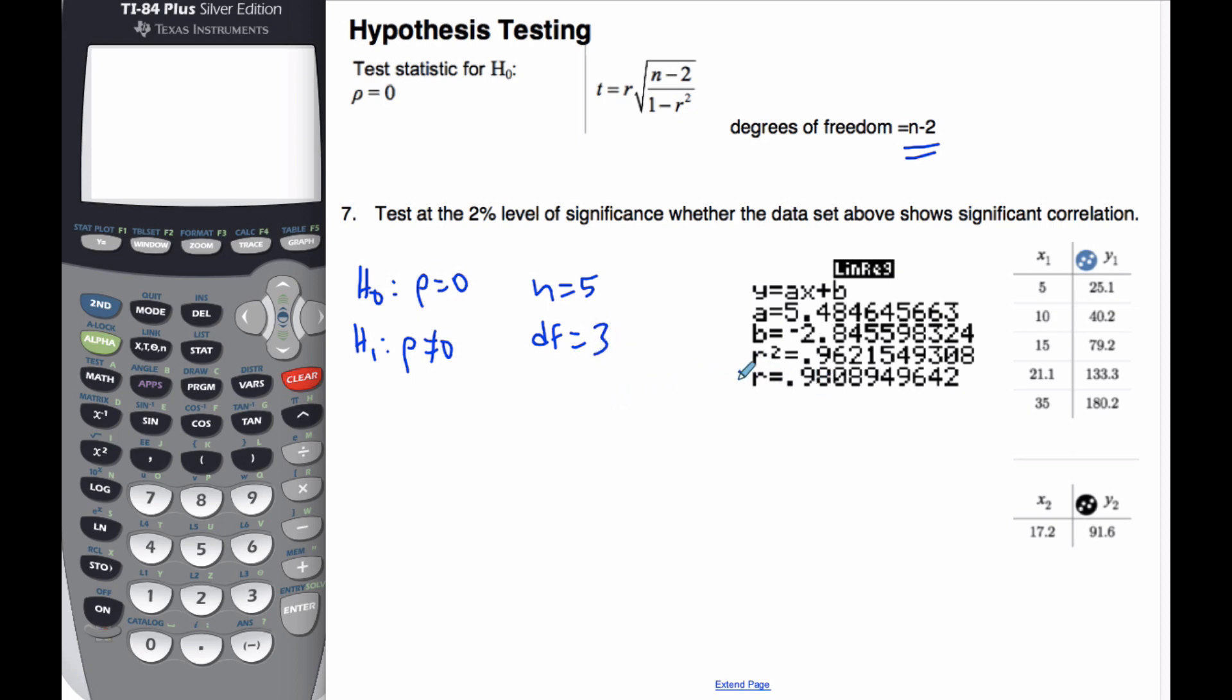I know that this is my R value, so T equals... Note, alpha equals 0.02. T equals R, which is a big, giant, long number.